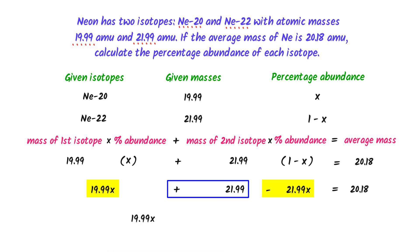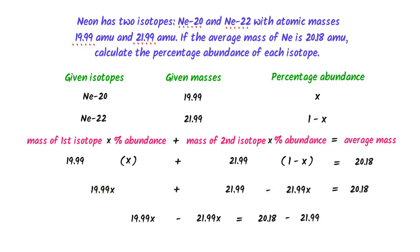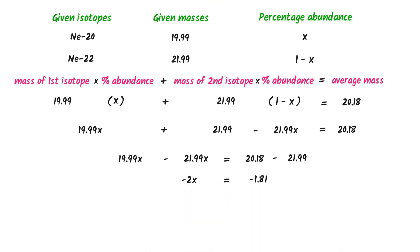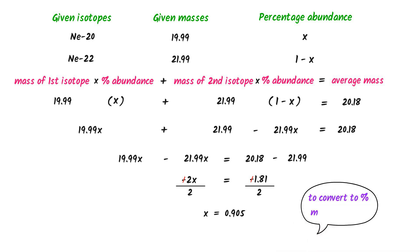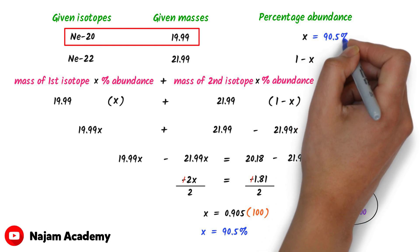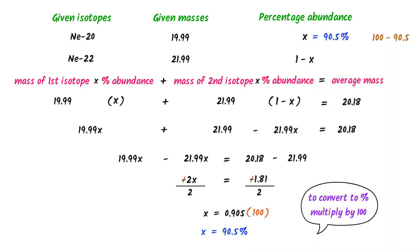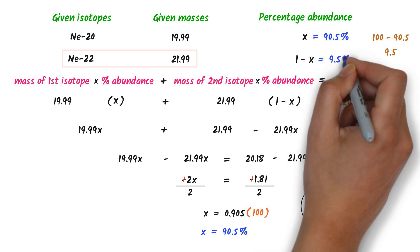Collecting X terms: 19.99X minus 21.99X equals 20.18 minus 21.99. After calculation, I get minus 2X equals minus 1.81. The minus signs cancel out, and I divide both sides by 2. I get X equals 0.905. To convert to percentage, I multiply by 100. I get X equals 90.5%. Hence, the percentage abundance of Neon-20 is 90.5%. Secondly, 100 minus 90.5 equals 9.5%, which is the percentage abundance of Neon-22.